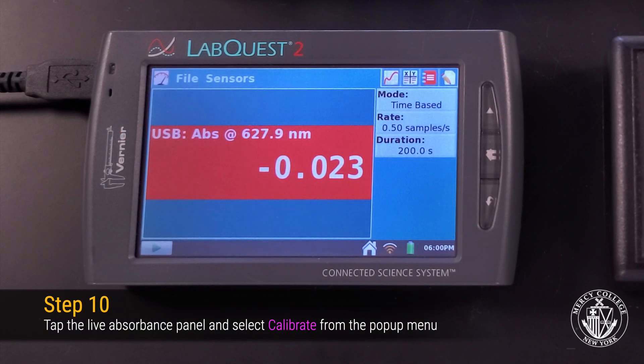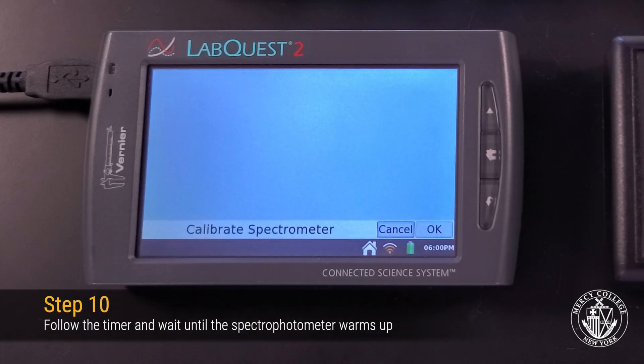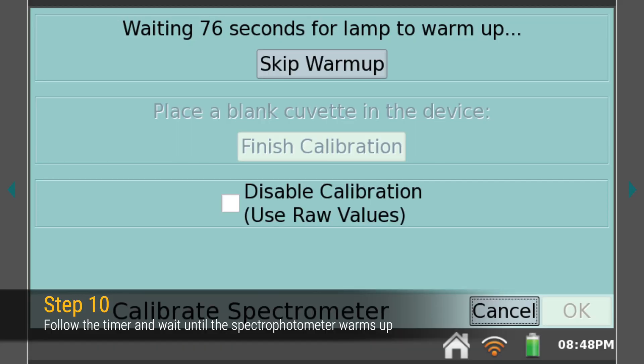Now tap on the absorbance panel and select Calibrate to calibrate your spectrophotometer. Again, wait for the lamp to warm up before you insert your blank.